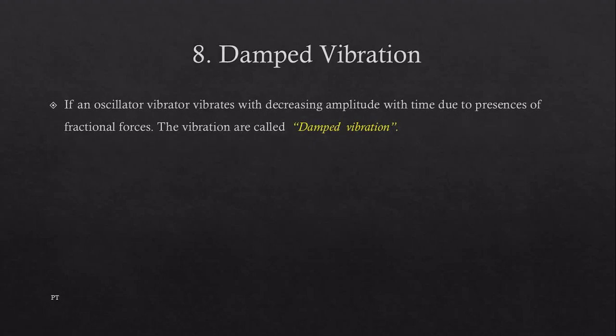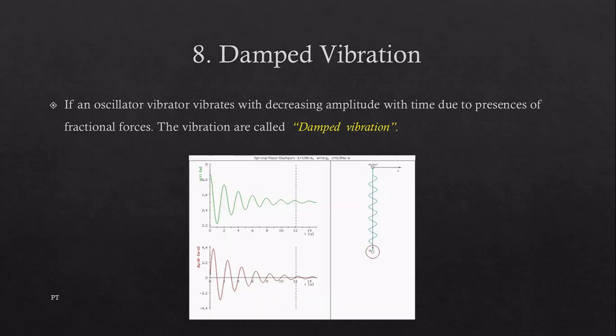Damped vibration: if an oscillator vibrates with decreased amplitude with time due to the presence of friction force, the vibrations are called damped vibrations. Something like a pendulum - once we free it, it is going to slow down and then go to steady state condition. As we can see over here, if we have some kind of spring-mass system and we release it, first it is going to oscillate and then be in its original or steady state condition.